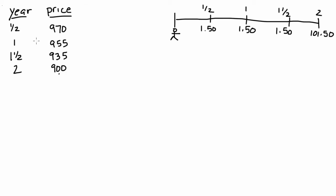Similarly, we are willing to pay $955 today in order to receive $1,000 in one year. What's nice about these STRIPS prices is that they give us the value of $1 of payoff in the future — or the price today of $1 of payoff in the future. We can think of this as the price per dollar of payoff in the future.